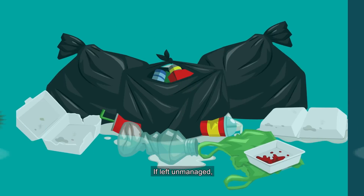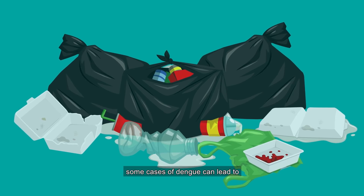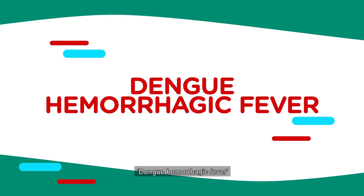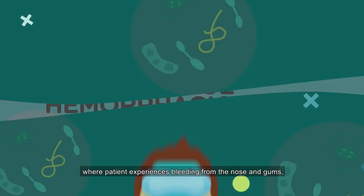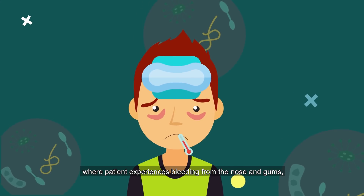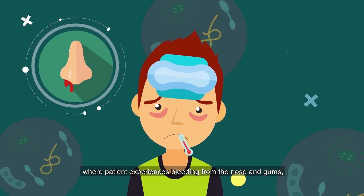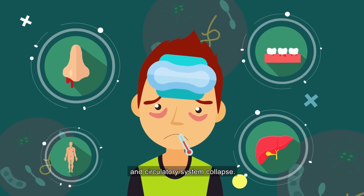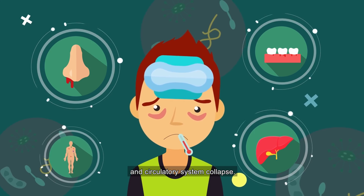If left unmanaged, some cases of dengue can lead to dengue hemorrhagic fever, where the patient experiences bleeding from the nose and gums, liver enlargement, and circulatory system collapse.